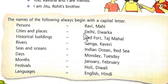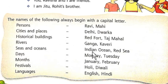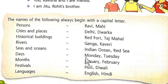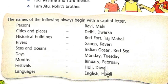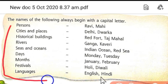Historical buildings are also written in capital letters — Red Fort, Taj Mahal. River names such as Ganga, Kaveri are capitalized. Oceans such as the Indian Ocean, Red Sea are capitalized. Days of the week — Monday, Tuesday — both written in capital. Months — January, February — written in capital. Languages such as English, Hindi are also written in capital letters.